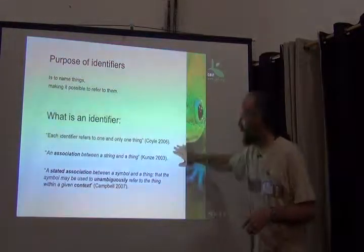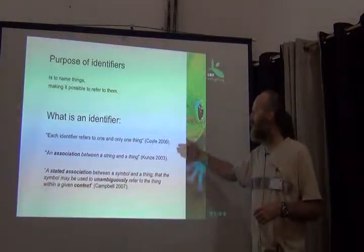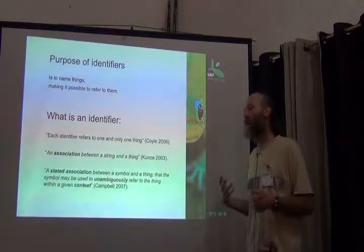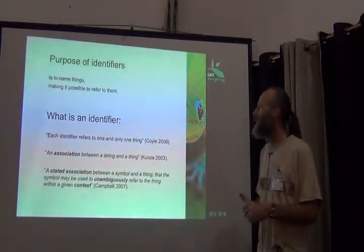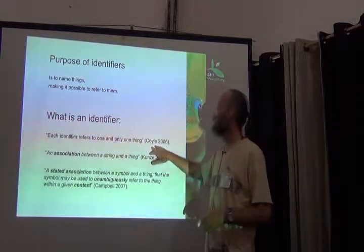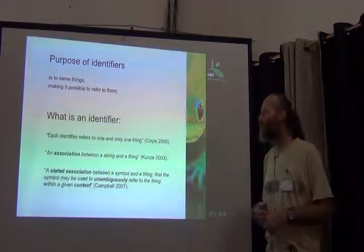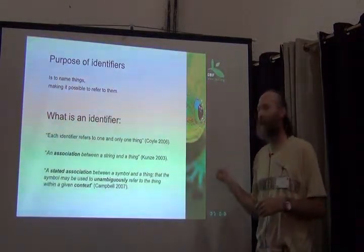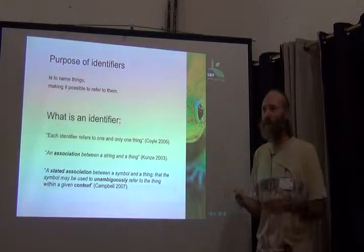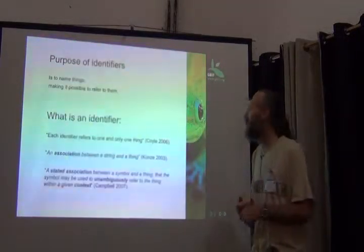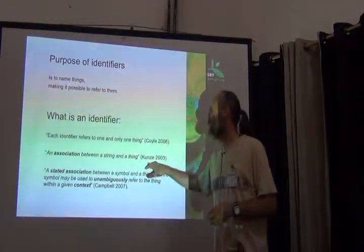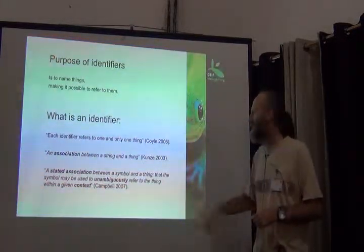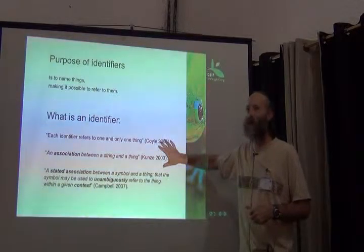What is an identifier then? Here are three different definitions that have evolved over time from different sources to describe how an identifier is used in the modern digital world. Coyle in 2006 says: each identifier refers to one and only one thing — its identity. If one identifier referred to more than one thing, it would be less useful. John Kuntz in 2003 says: it's an association between a string and a thing — a completely different viewpoint.